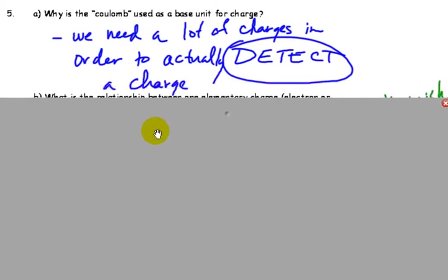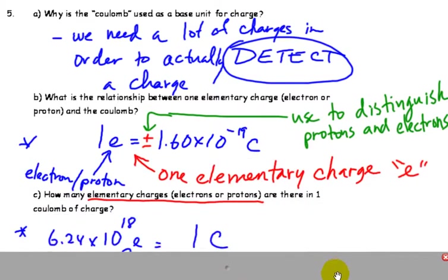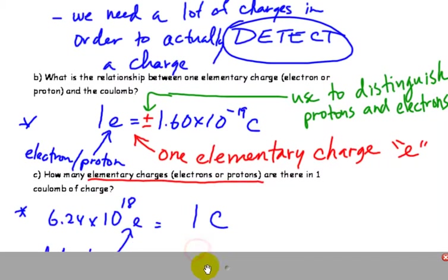Since a proton or electron is a really small unit of charge, we look at bundles of charges to make them measurable. So we need a lot of charges in order to actually detect a charge. So we use the word Coulomb to describe that. And we can define that in a couple of different ways. For part C here, you can see how many elementary charges, whether it's protons or electrons, how many of them make up one Coulomb.